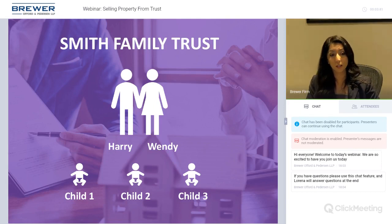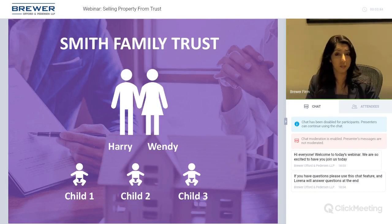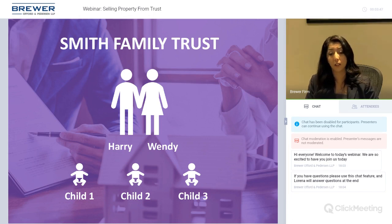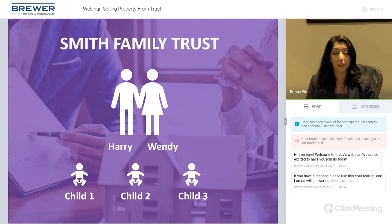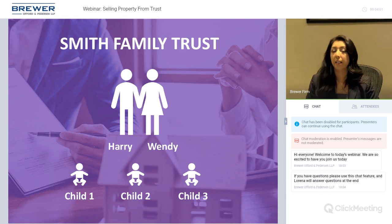For this presentation I'm going to use the Smith family as an example. Harry and Wendy are the husband and wife, and we have children one, two, and three. I like to use three children because it's a lot easier for examples. In this whole scenario, Harry and Wendy have executed the Smith Family Trust.